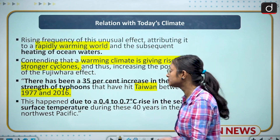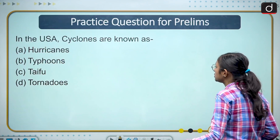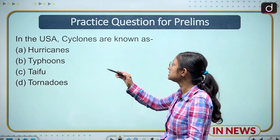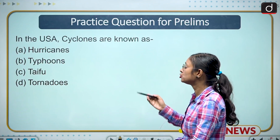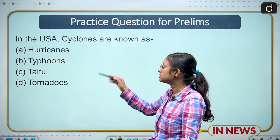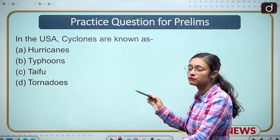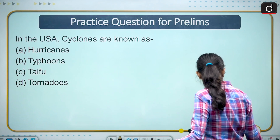Moving to the prelims question: in the USA, cyclones are known as — your options are hurricanes, typhoons, or tornados. You have to answer this in the comment section.